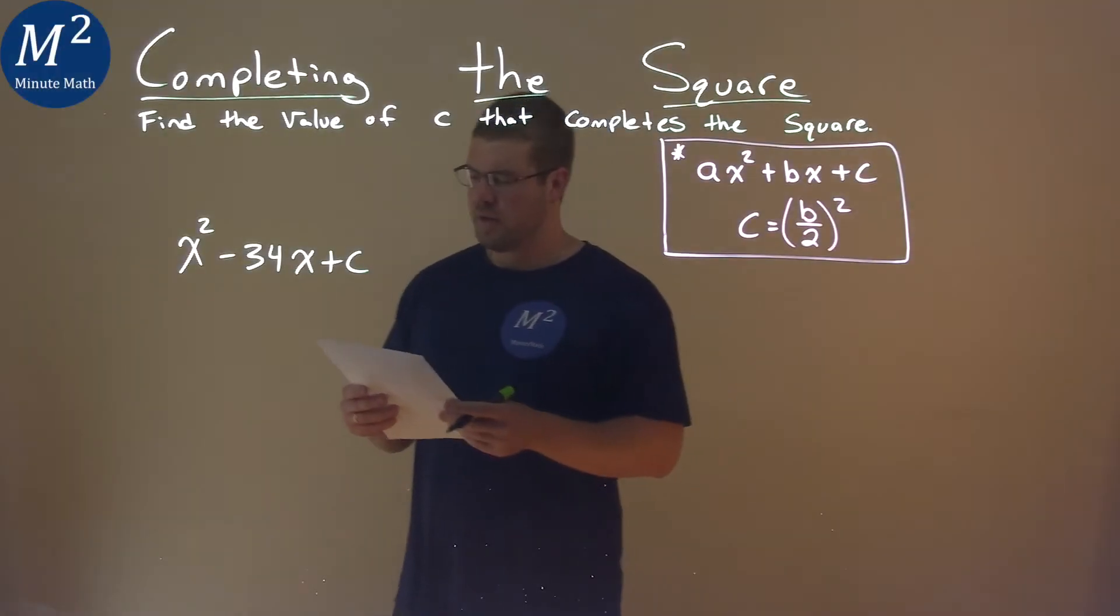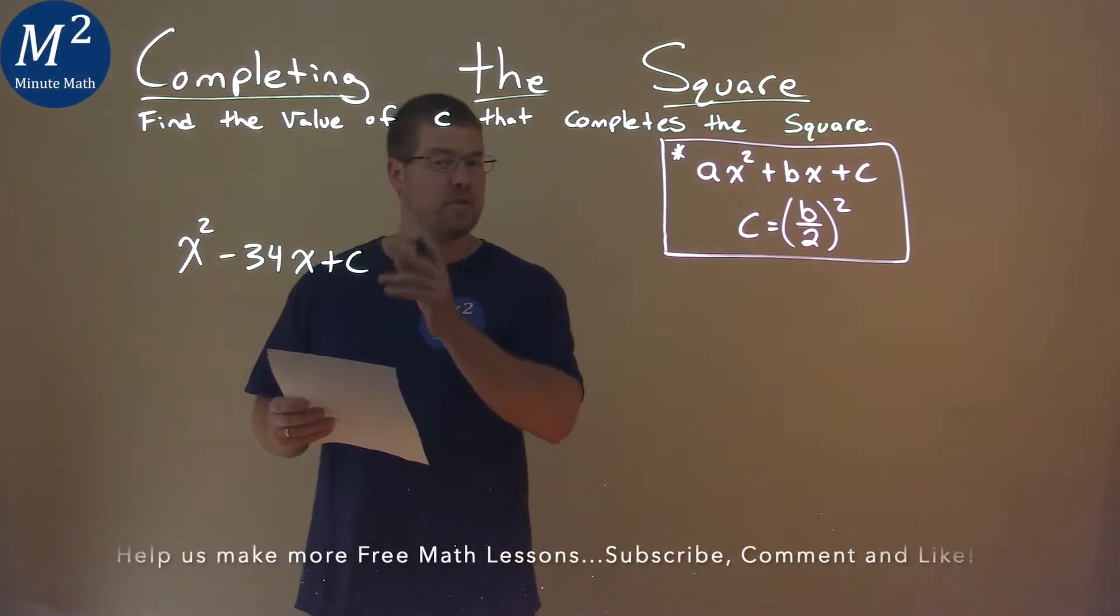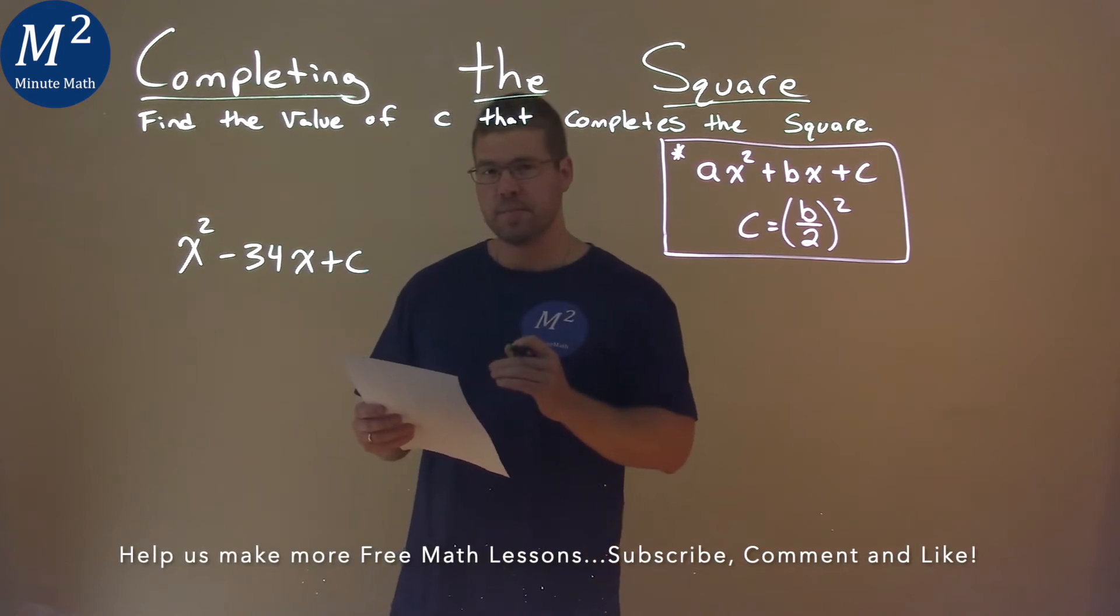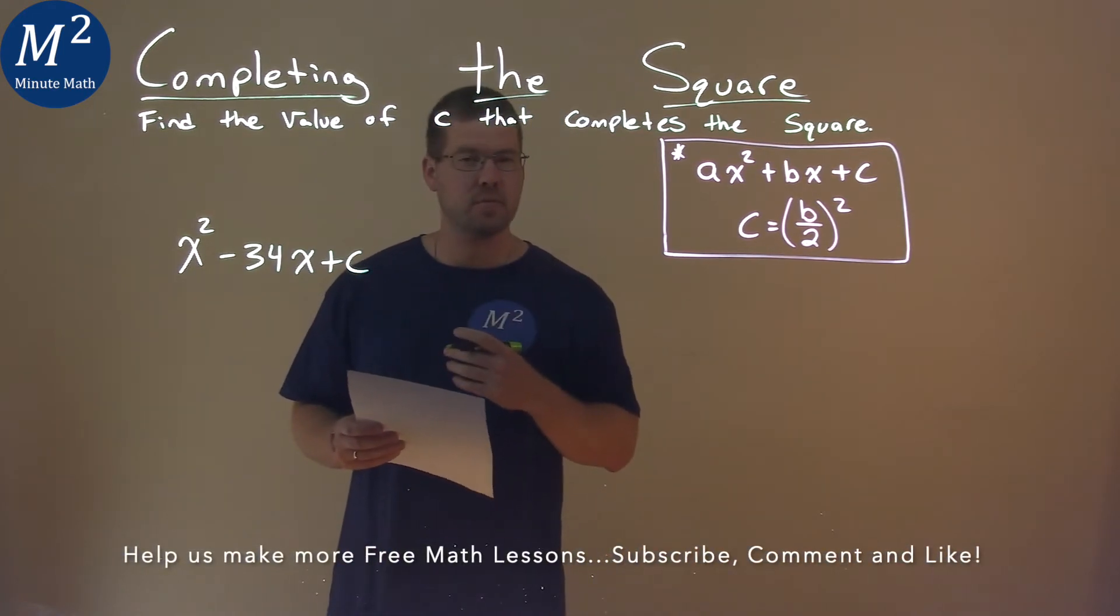We're given this problem right here, x squared minus 34x plus c, and we need to find the c value that completes the square.